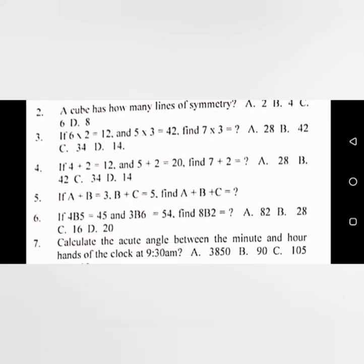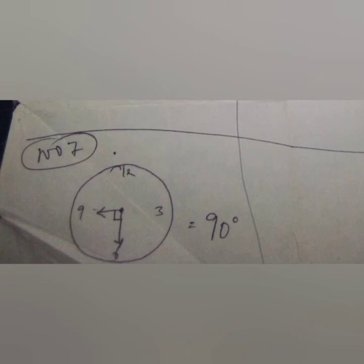The last question says: calculate the acute angle between the minute and hour hand of a clock at 9:30 AM. At 9:30, if you draw it, it looks like a right angle triangle — the angle covered is 90 degrees. The whole clock is 360 degrees, so each quarter is 90 degrees. The part we are looking at — at 9:30 — is 90 degrees.